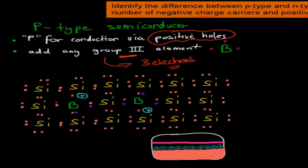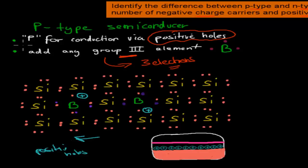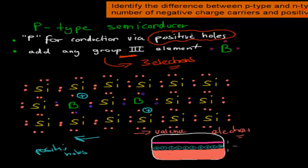What we're going to see usually is your positive holes moving in one direction and your electrons moving in the opposite direction — your electrons moving this way. That helps us carry current. So that is one way that we can conduct current in a P-type semiconductor.